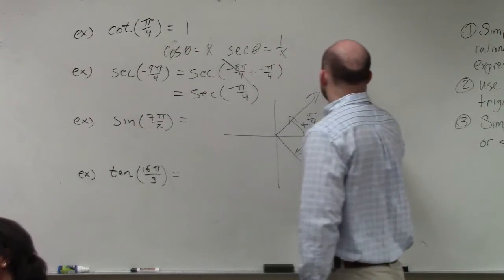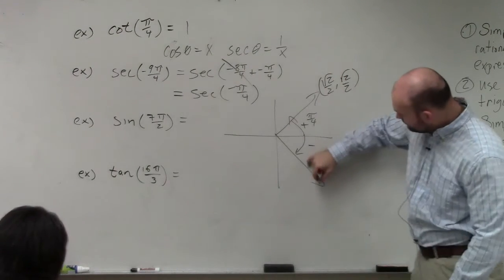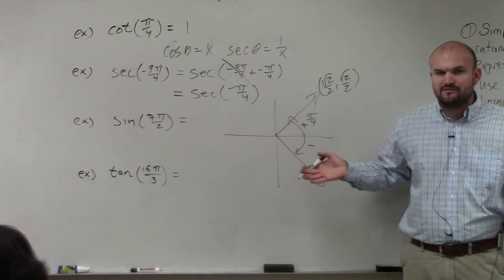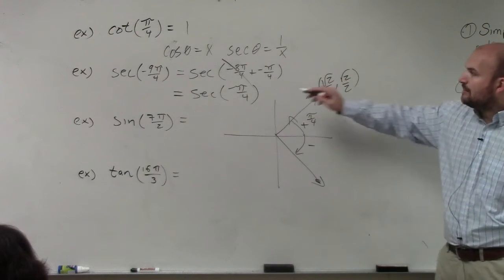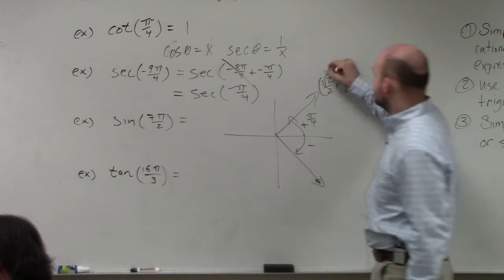So if the coordinate point is √2/2, √2/2, it's the exact same point but just being reflected over the x-axis. So then which coordinate is going to be negative? My y-coordinate. However, it doesn't really matter for this one because secant is what? x, right?